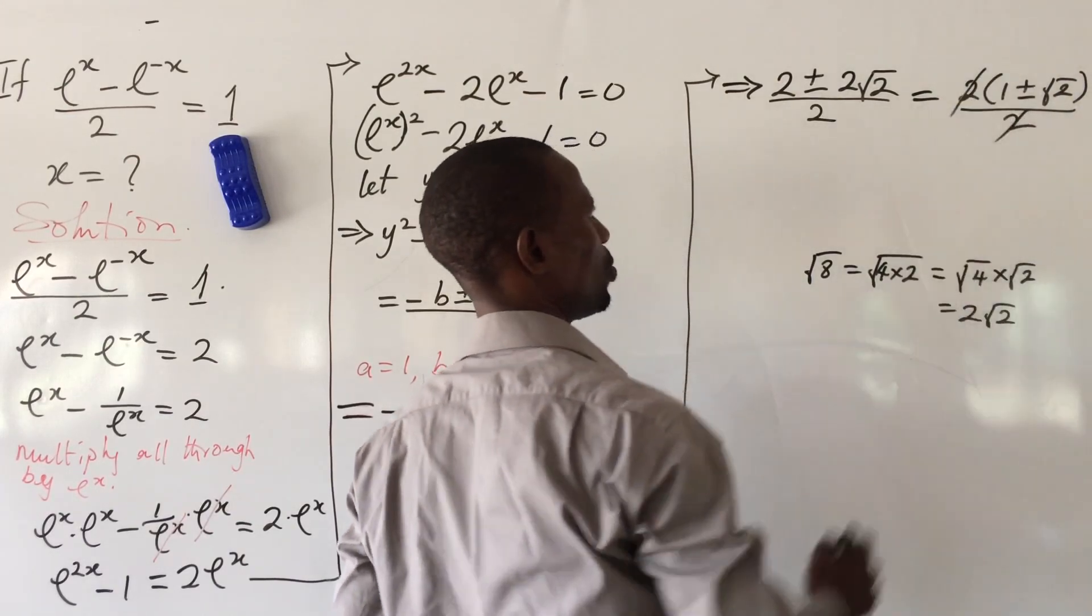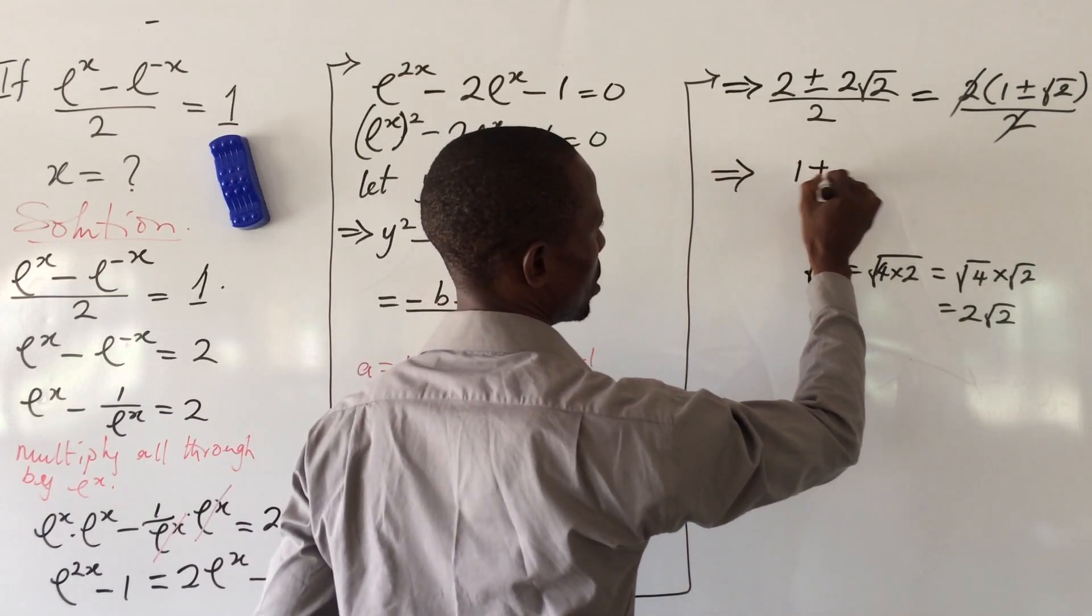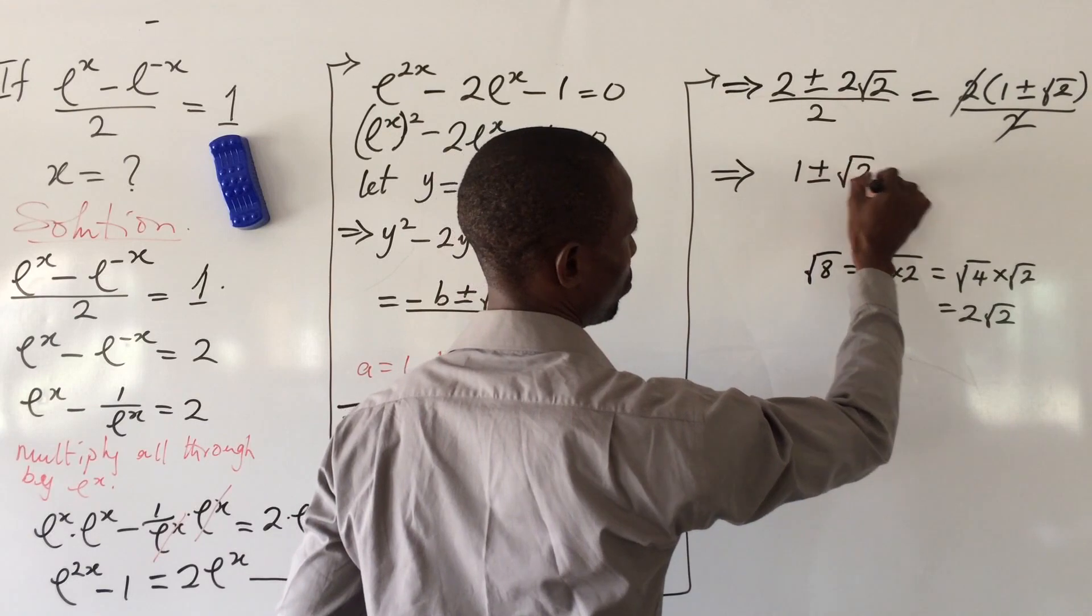These 2s will cancel, so we end up having 1 plus minus root 2.